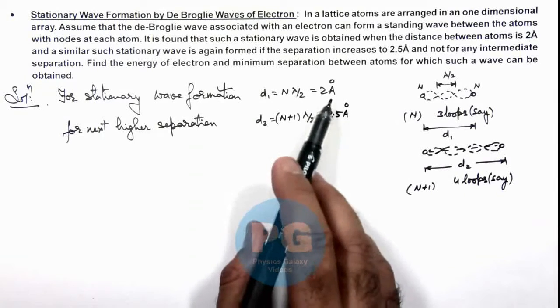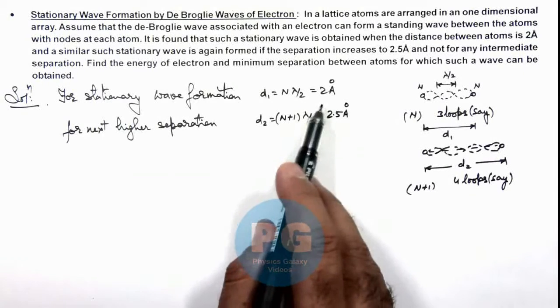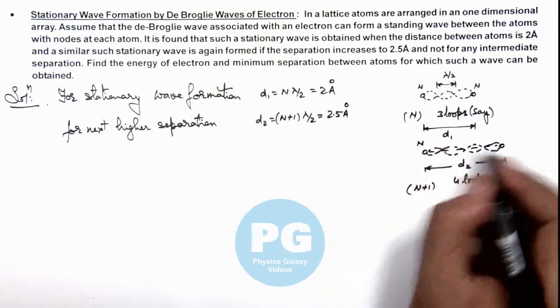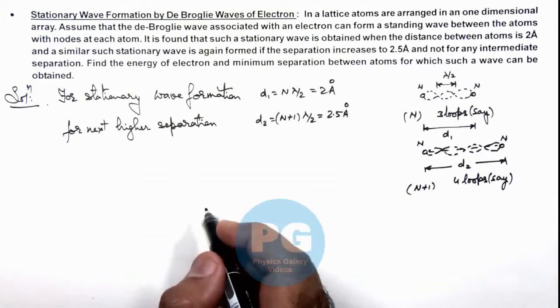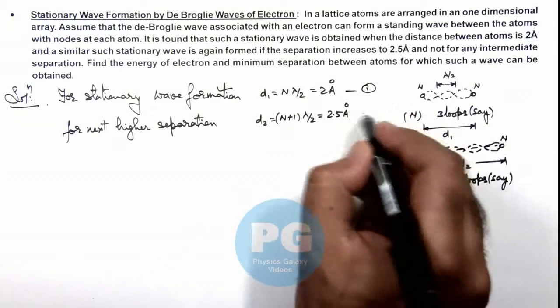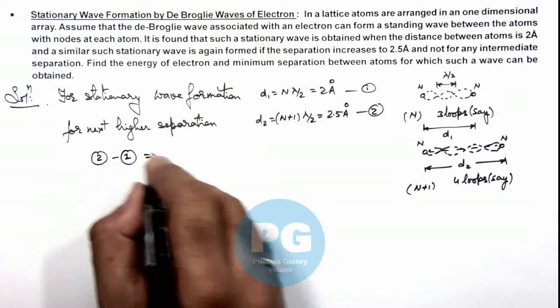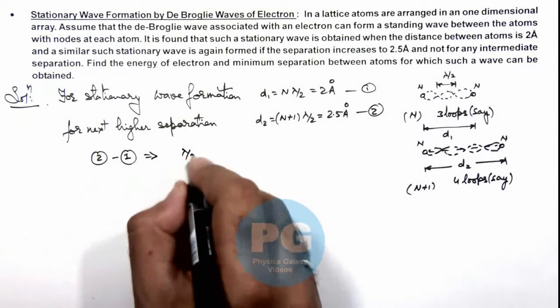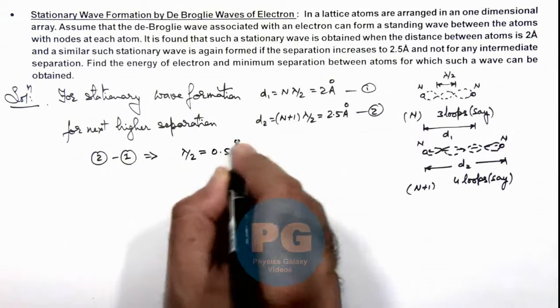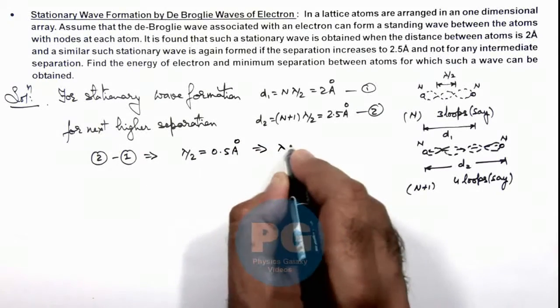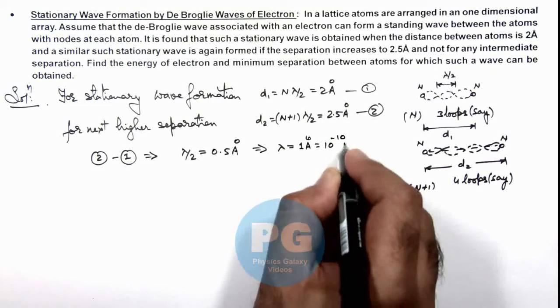For which we can say there is no intermediate separation at which the loop is found because nodes must be obtained at both of the atomic sites which are adjoining to each other. So from these equations, if these are 1 and 2, we can write equation 2 minus equation 1 will result in λ/2 equal to 0.5 angstrom. So the de Broglie wavelength we are getting is 1 angstrom, that is 10⁻¹⁰ meter.